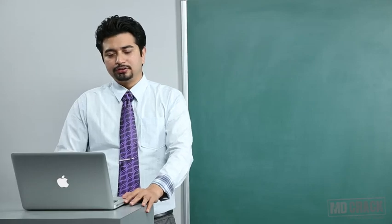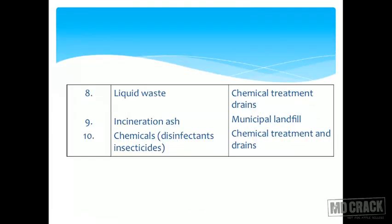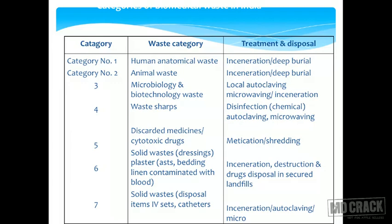The important table shows on the left the category of waste, in the middle the waste category name, and on the right the treatment and disposal. There are categories 1 through 10. Category 1 is human anatomical waste, treated by incineration and deep burial. Category 2 is animal anatomical waste, also incineration and deep burial. Category 3 is microbiological and biotechnology waste, sent for local autoclaving, microwaving, or incineration.